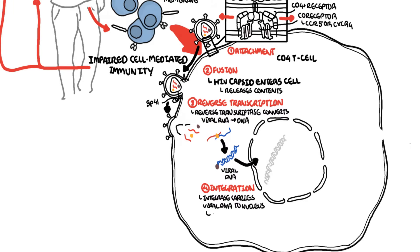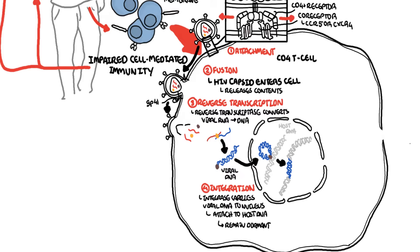Once the proviral DNA enters the cell nucleus, it binds to the host DNA, and the HIV DNA strand is inserted into the host cell DNA. After the proviral DNA is integrated into the host's DNA, HIV either continues to use the body's own cell machinery to replicate, or it will remain dormant within the cellular DNA. This stage is called latency, and the cell is described as latently infected.